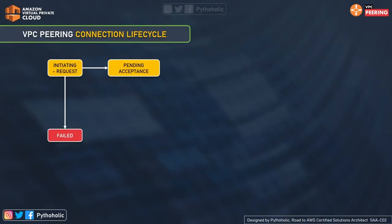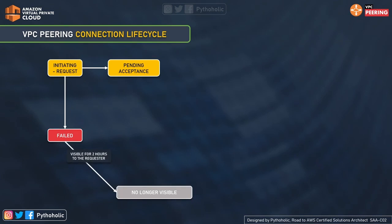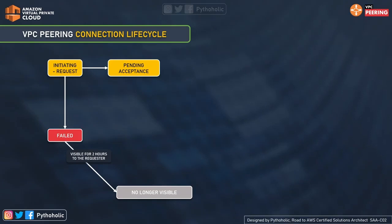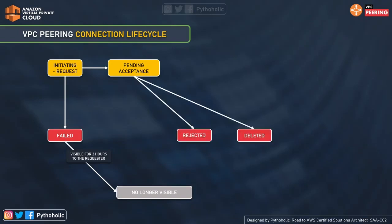The first step is when we initiate a request for a peering connection. The peering connection may either fail or go to the pending acceptance stage. Once the request has failed, it cannot go back to accepted, rejected, or deleted states. The failed peering connection remains visible to the requester for two hours. In the pending acceptance state, it is waiting to be accepted by the acceptor VPC owner. The owner of the requester VPC can delete the request — in other words, the requester can back off from creating the VPC peering connection.